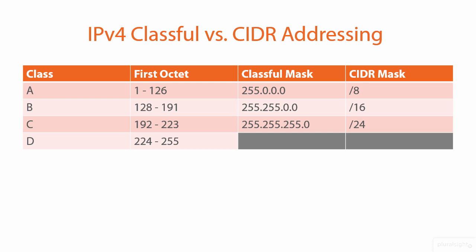IPv4 addresses are broken into classes: A, B, C, D — there are some others that we don't need to worry about. The classes are easily identifiable by looking at that first decimal number, the first octet in the address. If it's between 1 and 126, that's at least originally a class A address and uses the classful mask 255.0.0.0.